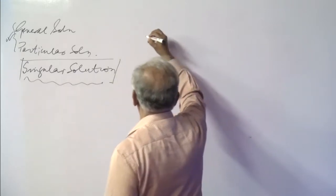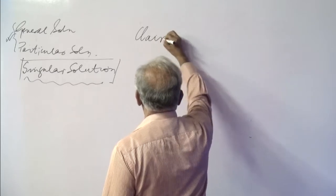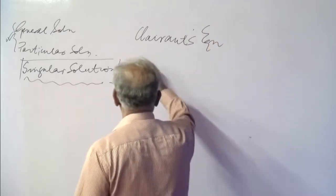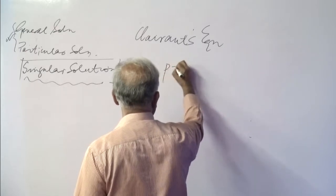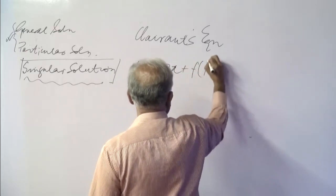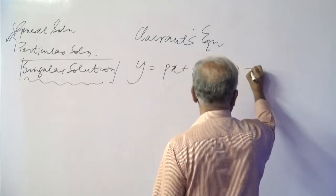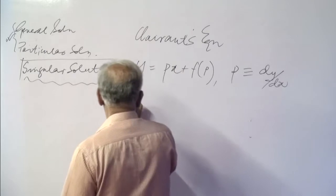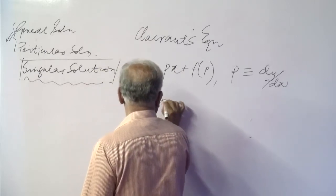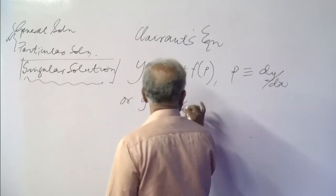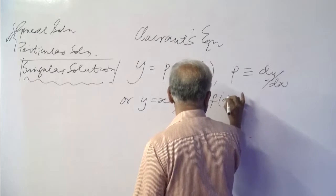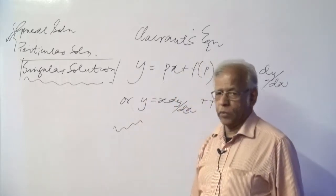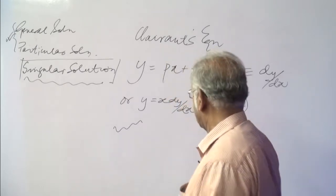Clairaut's equation is very simple to write. It is written as y equals px plus f(p), where p stands for dy/dx. In other words, we can write y equals x times dy/dx plus some function of dy/dx. This is the Clairaut's equation: y equals x·dy/dx plus some arbitrary function of p, that is dy/dx itself.